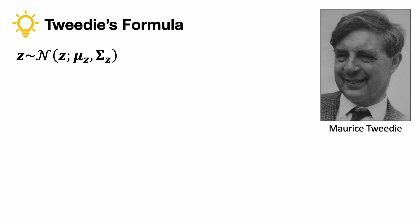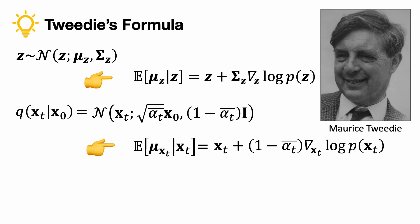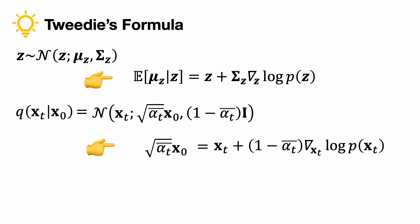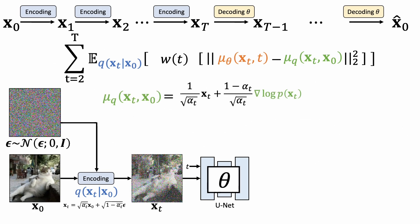To discuss the third interpretation, we need to use Tweedie's formula. The formula states that if we observe a sample z from a Gaussian distribution, the posterior expectation of the mean is the sample plus a correction term involving the gradient of the log-likelihood or the score of the estimate. Let's apply the formula to our forward diffusion probability. Replace the mean here, and we now have this expression. When we replace the clean image x0, we arrive at this equation involving the score. Similarly, we can parametrize our mean estimate using the same form.